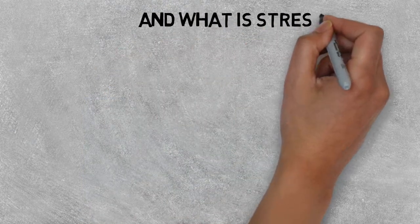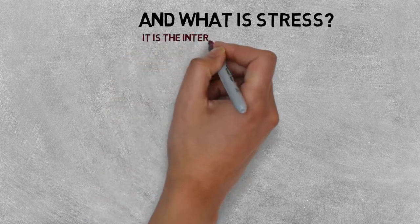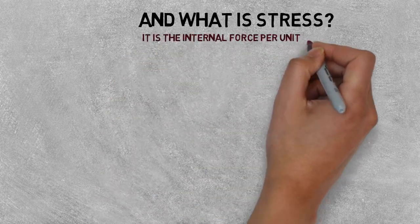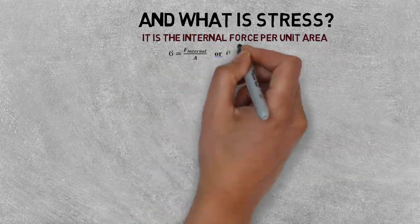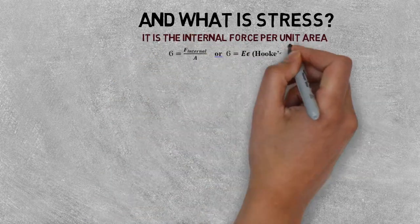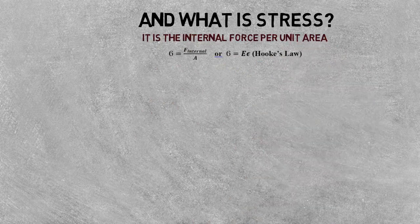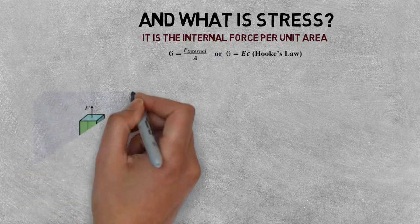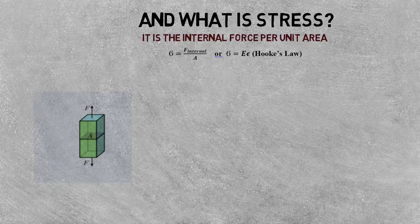Now coming to stress. Stress is the internal force per unit area — that is, stress equals internal force over area A. In terms of Hooke's law, stress equals elastic modulus times strain, or sigma is equal to E times epsilon. Again considering the same rectangular box acted on by external forces at both ends, let's cut the box with an imaginary plane at the middle.